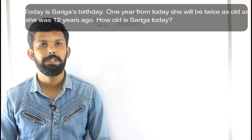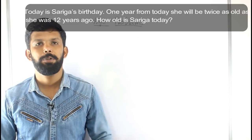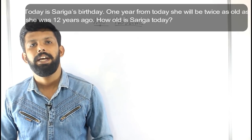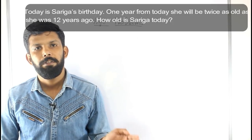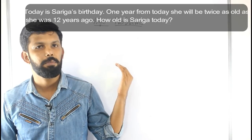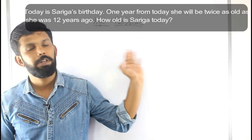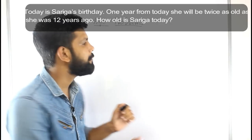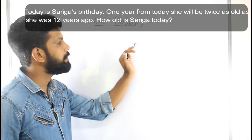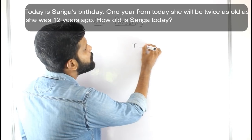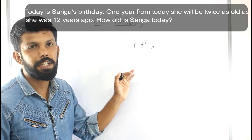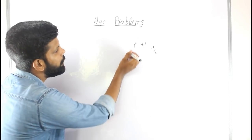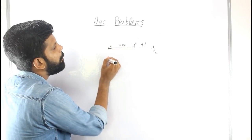Next question: Today is Sariga's birthday. One year from today, she will be twice as old as she was 12 years ago. How old is Sariga today? We set up the equation: present age plus 1 year on one side, and present age minus 12 years on the other. The ratio of the two expressions is 1 is to 2.